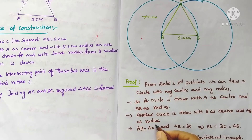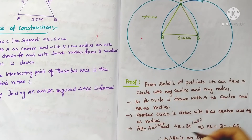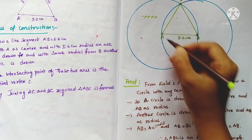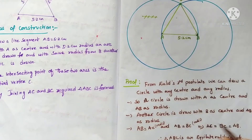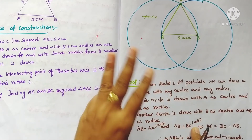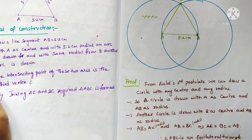Similarly, AB is equal to BC, because from B we drew the second circle, so AB and BC are both radii of that circle. That implies AC is also equal to BC, and equals AB. Therefore, all three sides of triangle ABC are equal, so triangle ABC is an equilateral triangle.